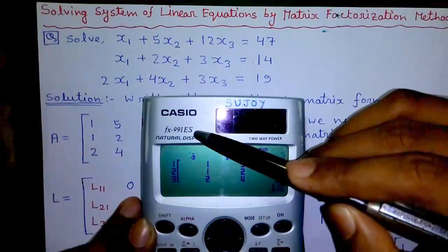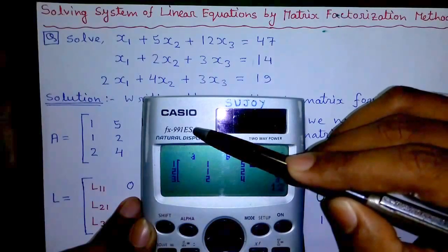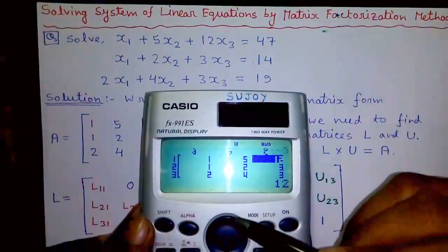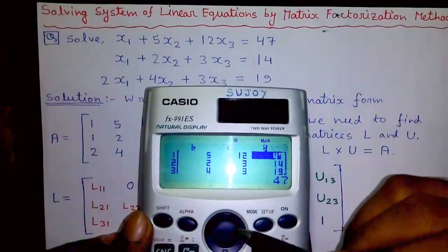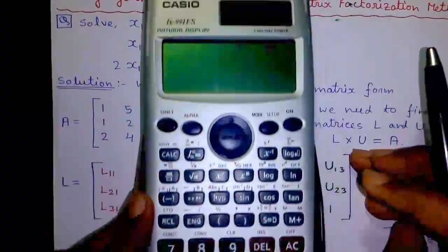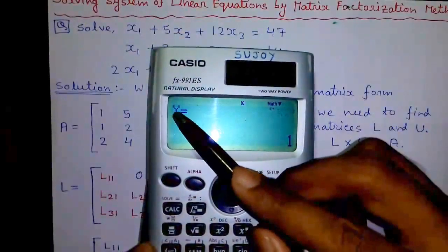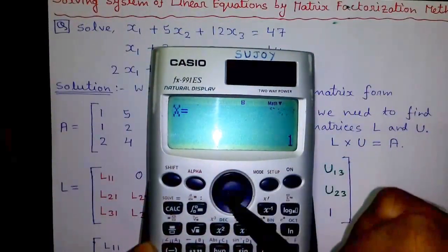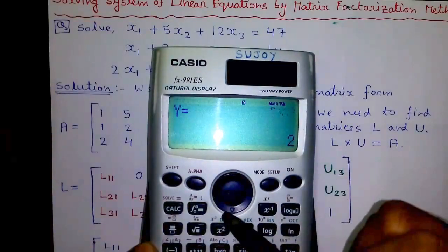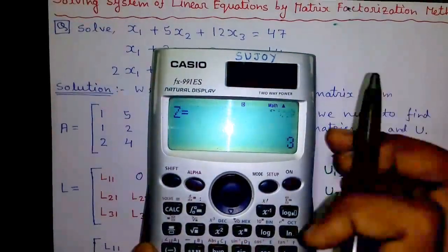You can solve a system of linear equations directly on this calculator using mode 5 equation solver mode. I have entered the coefficients already. Pressing equals gives x1 equals 1, x2 or y equals 2, x3 or z equals 3.